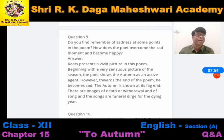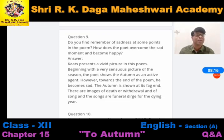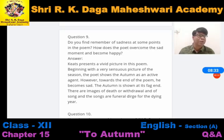Do you find a reminder of sadness at some points in the poem? How does the poet overcome the sad moment and become happy? The poet shows autumn as an active agent. There are images of death or withdrawal and of song. It is told that the sun starts to die and the song starts to end with it — the songs are a funeral dirge for the dying year.